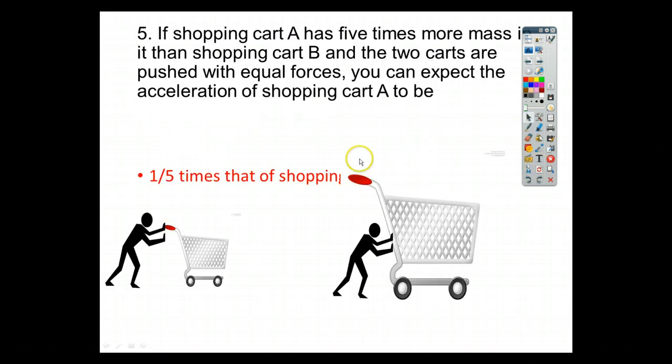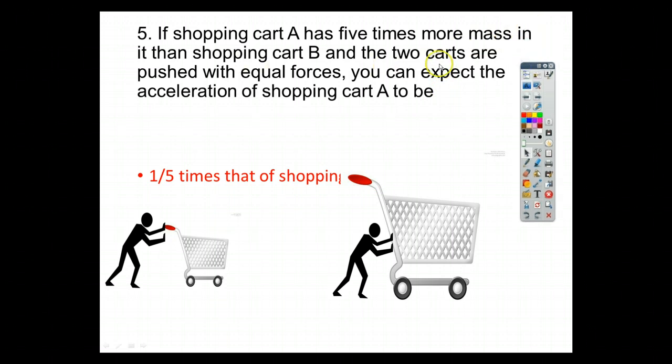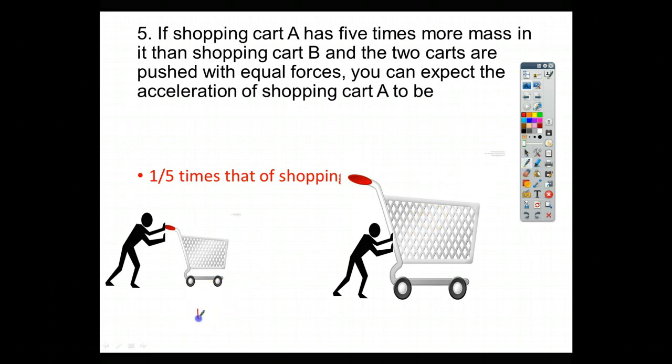For number 5, if shopping cart A has 5 times more mass in it than shopping cart B, and the two carts are pushed with equal forces, you can expect the acceleration of shopping cart A to be one-fifth that of shopping cart B. So, here's shopping cart A, here's shopping cart B. The shopping cart A will have one-fifth the acceleration of shopping cart B. So, this one will have a lot more acceleration than this will because it's a lot easier to get it accelerated.